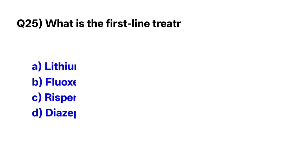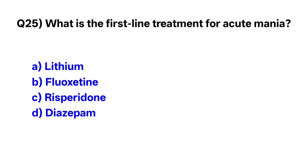Question number twenty-five: What is the first-line treatment for acute mania? The correct option is A, lithium.